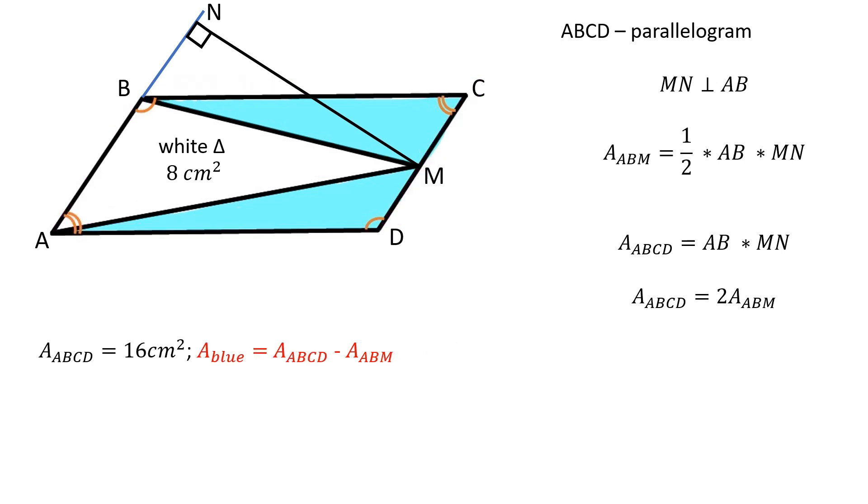The area of the blue shape is equal to the difference between the area of the parallelogram ABCD and the area of the triangle ABM, which is equal to 8 cm squared.